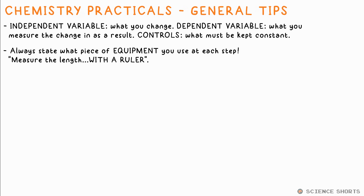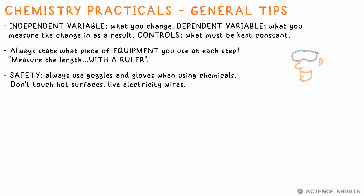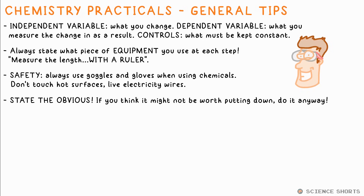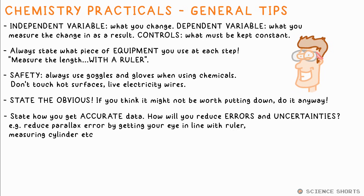Always say what piece of equipment you use for each measurement. Don't just say 'measure the length of the object' — also add 'with a ruler' or whatever you're using. That's a mark in itself. When it comes to safety, we always use goggles and often gloves when working with chemicals. State the flipping obvious — if you think 'surely they don't want me to put that', put it down anyway. You never know what marks you might pick up.